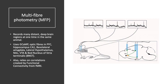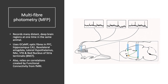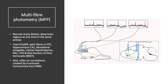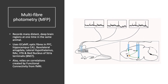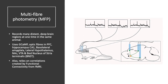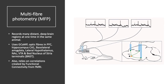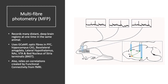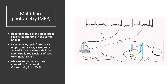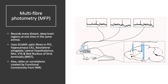Multi-fiber photometry, or MFP, records many distant deep brain regions at one time in the same animal. It uses GCaMP and optic fibers in the prefrontal cortex, hippocampus CA1, basolateral amygdala lateral hypothalamus, nucleus accumbens, ventral tegmental area, and bed nucleus of stria terminalis, or BNST.